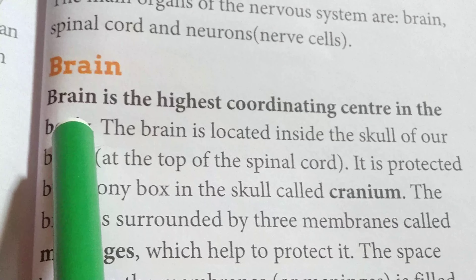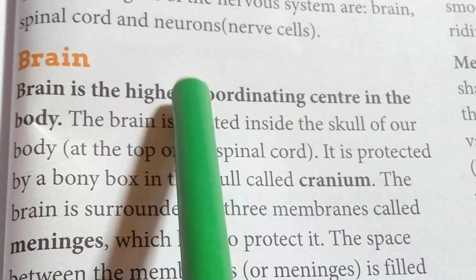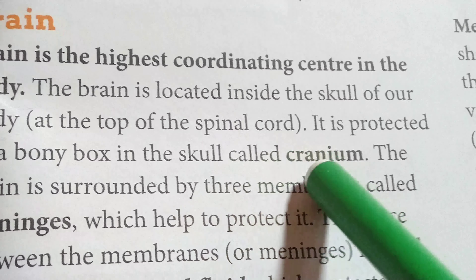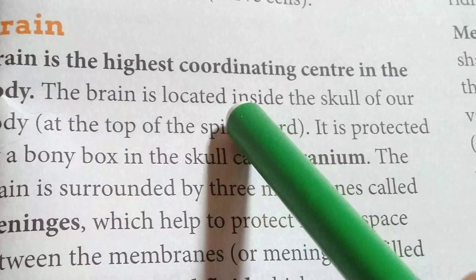Brain is the highest coordinating center in the body, because brain is the main functioning organ that controls and coordinates each organ. That's why it is known as the highest coordinating center of the body. The brain is located inside the skull, protected by a bony box called the cranium.